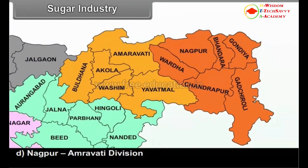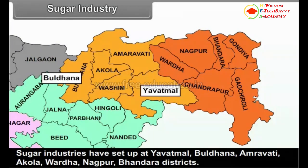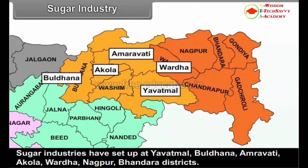D. Nagpur-Amravati Division: Sugar industries have been set up at Yavatmal, Buldana, Amravati, Akola, Wardha, Nagpur and Bhandara districts.